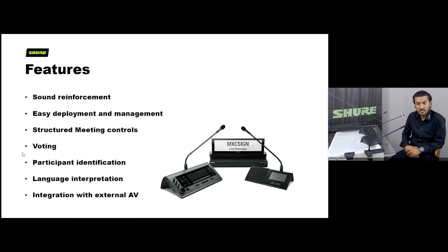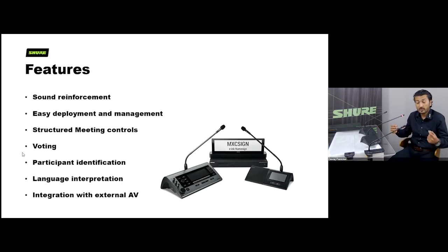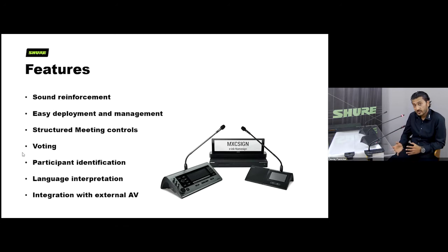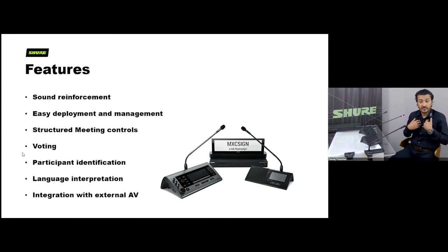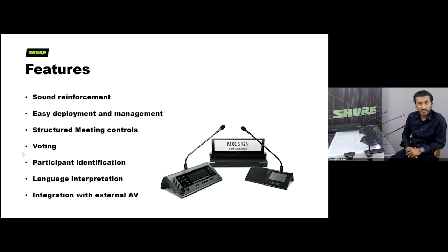Key features of these systems include: sound reinforcement; easy deployment and management through daisy-chaining rather than individual cables to the rack; structured meeting controls from the central control unit or software; voting features; and participant identification. When a delegate presses a button, the software knows who is speaking, how much time they have, and you can define what to do with that information.